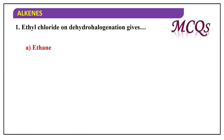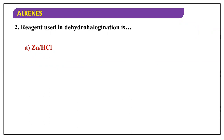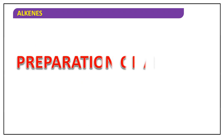MCQ: Ethyl chloride on dehydrohalogenation gives what — ethane, ethene, ethyne, or none of these? The answer is ethene. The reagent used in dehydrohalogenation is: zinc/NH3, alcoholic KOH, aqueous KOH, or zinc? The answer is alcoholic KOH.